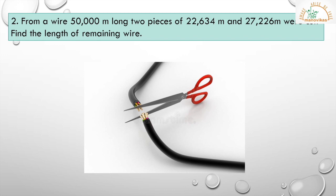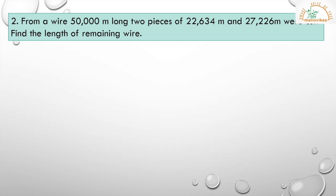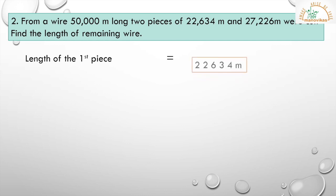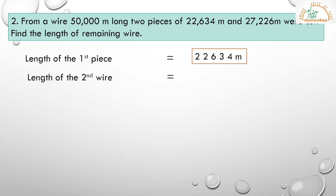Let's solve the second problem. From a wire 50,000 meters long, two pieces of 22,634 meters and 27,226 meters were cut. Find the length of the remaining wire. First we will add the lengths of the two pieces, then subtract from the actual wire. Length of the first piece is 22,634 meters. Length of the second wire is equal to 27,226 meters.